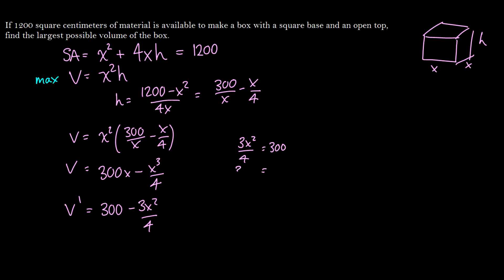So we're going to get 3x squared divided by 4 is equal to 300. So we have 3x squared is equal to 1,200. So here we have x squared is equal to 400. So x is going to be plus or minus 20. But of course, we cannot have a negative dimension in a box. So x is going to be 20.